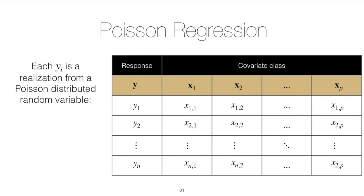Recall from an earlier video at the beginning of our study of generalized linear models: GLMs consist of three different components. There's a random component, which should come from the exponential family of distributions, a systematic component, and a link between the two. Once we specify those components, we can sample data, use the model to estimate parameters, come up with explanations, and predict new measurements.